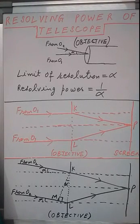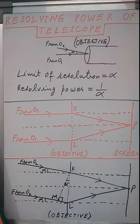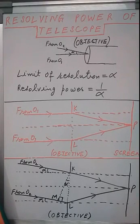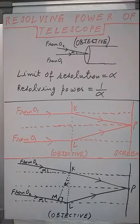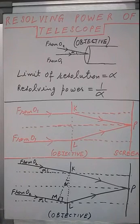In this video, I will share some very important points about resolving power of a telescope. A telescope is an optical instrument used for observing a magnified image of an object lying at infinite distance. The ability of a telescope to show distinct images of two closely lying point objects is called resolving power of a telescope. This is the qualitative definition of resolving power.